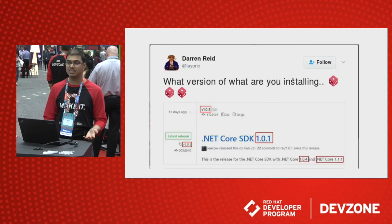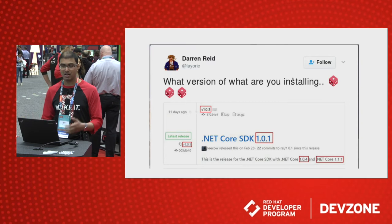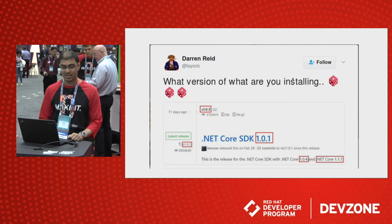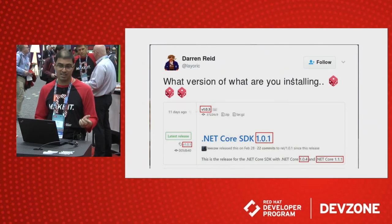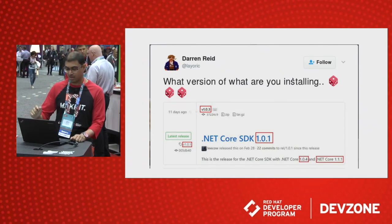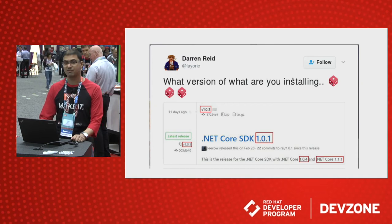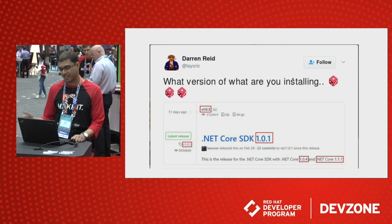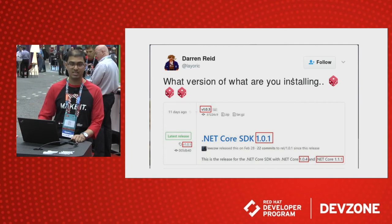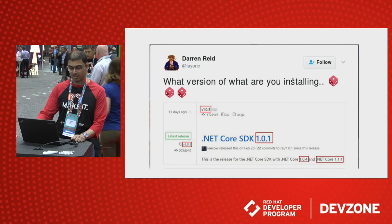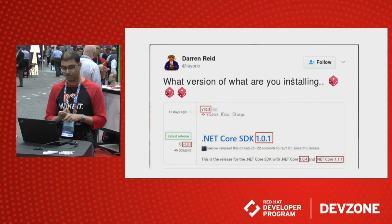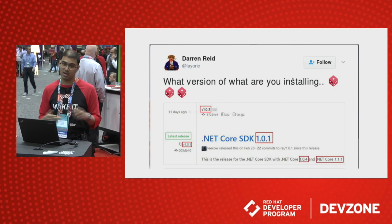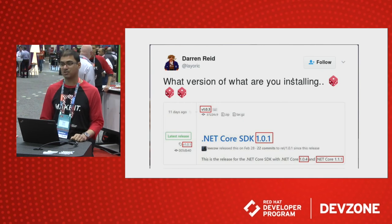So hopefully this has been really educational, and now you can make a little bit more sense about versions. Going back to the original tweet: the SDK version is 1.0.1 — that's the version of the CLI. When it says 1.0.4 .NET Core, that's a version of the runtime. And when it says .NET Core 1.1.1, that's again the version of the runtime. So in this case, when you download this particular binary, you're going to get a CLI of version 1.0.1 and two runtime versions: 1.0.4 and 1.1.1. Hopefully versioning makes a little more sense now.